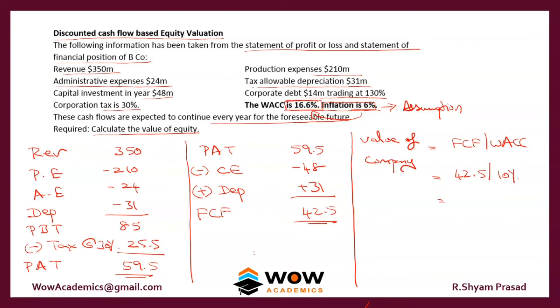Using the real WACC of 10% as the denominator, the value of the company comes to 42.5 ÷ 0.10 = 425.